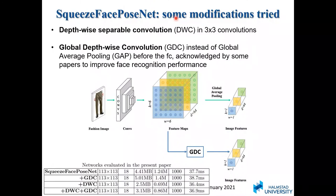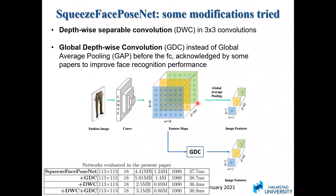We also tried two modifications not present in the original SqueezeNet. One is the use of depthwise separable convolution in 3×3 convolutions. By applying depthwise convolution, the model size and number of parameters are substantially reduced. We have also incorporated global depthwise convolution instead of regular global average pooling before the fully connected layer. In standard global average pooling, elements within each channel are simply averaged to produce a single scalar, and this is repeated for all channels to form the flattened vector fed to the fully connected layer.